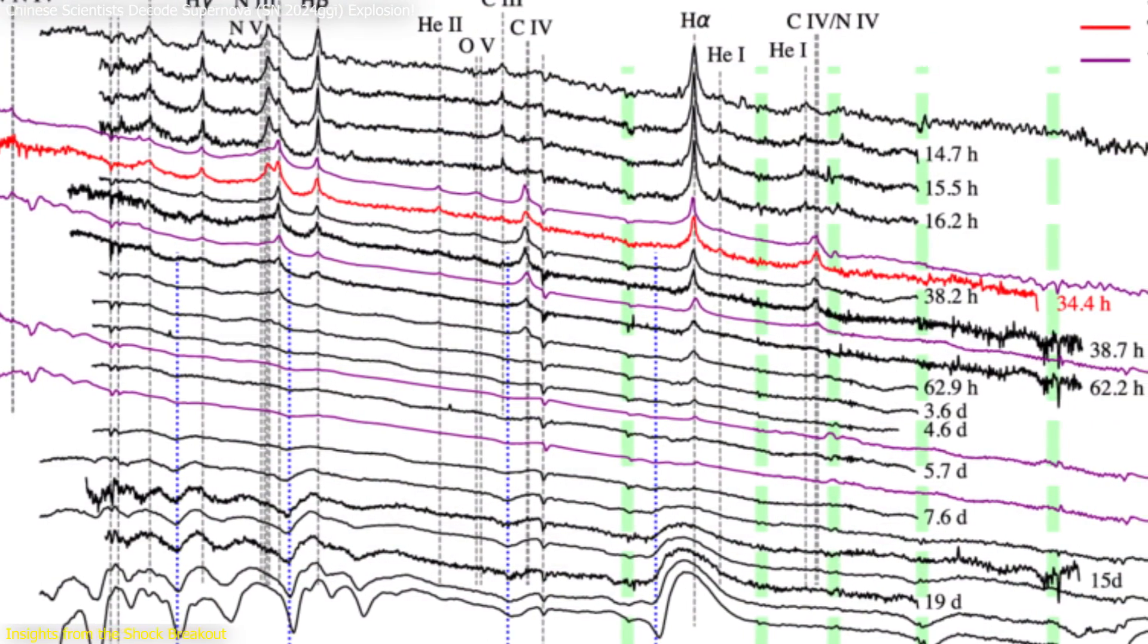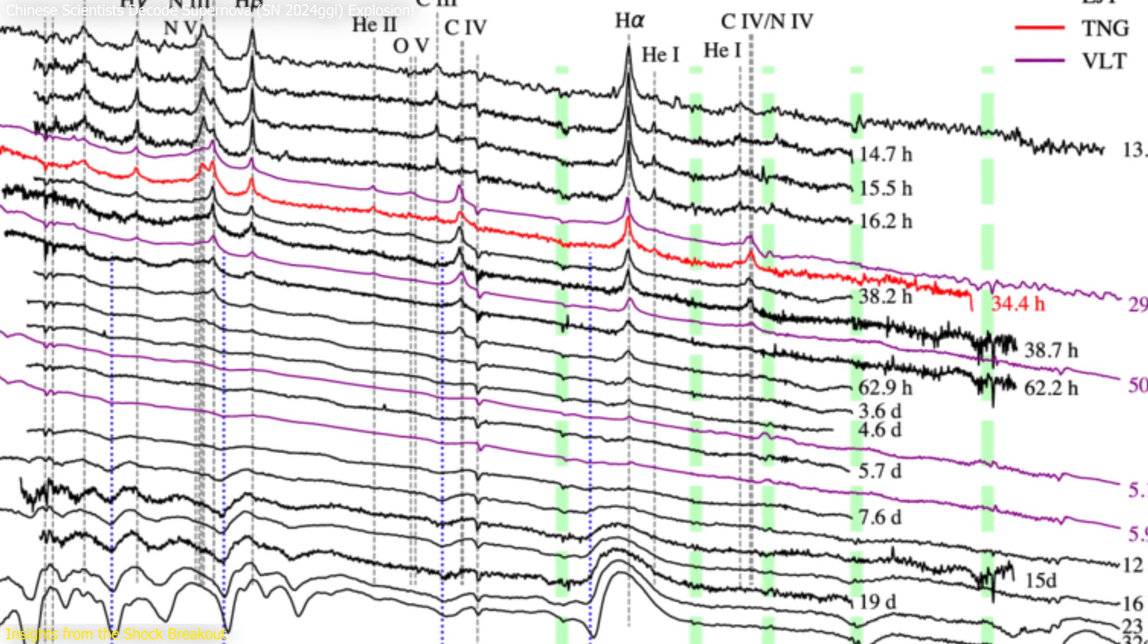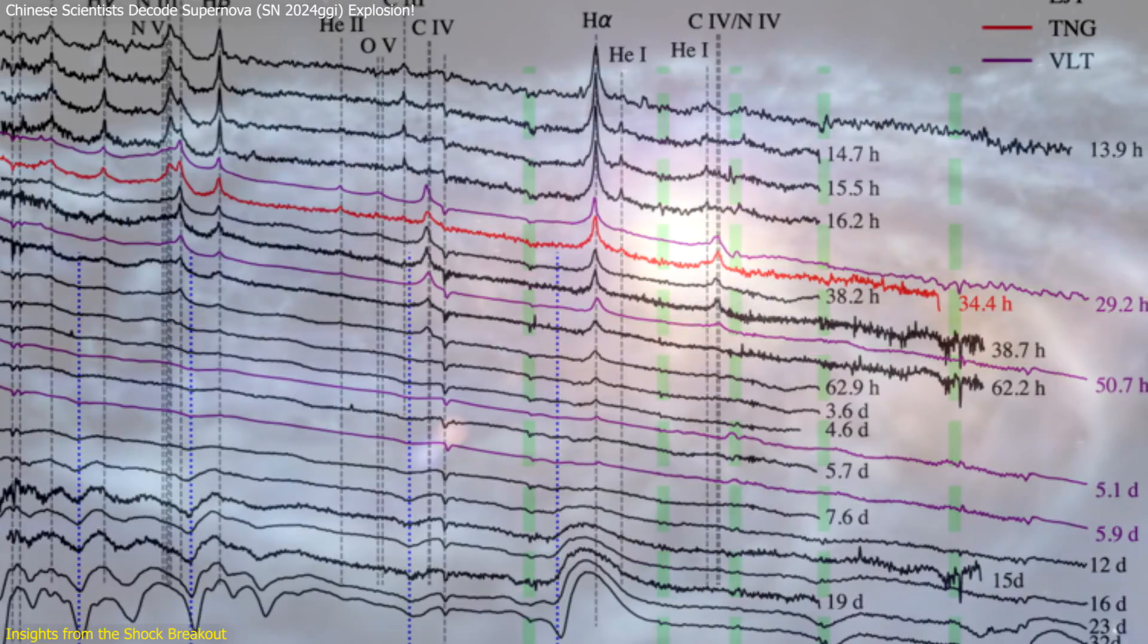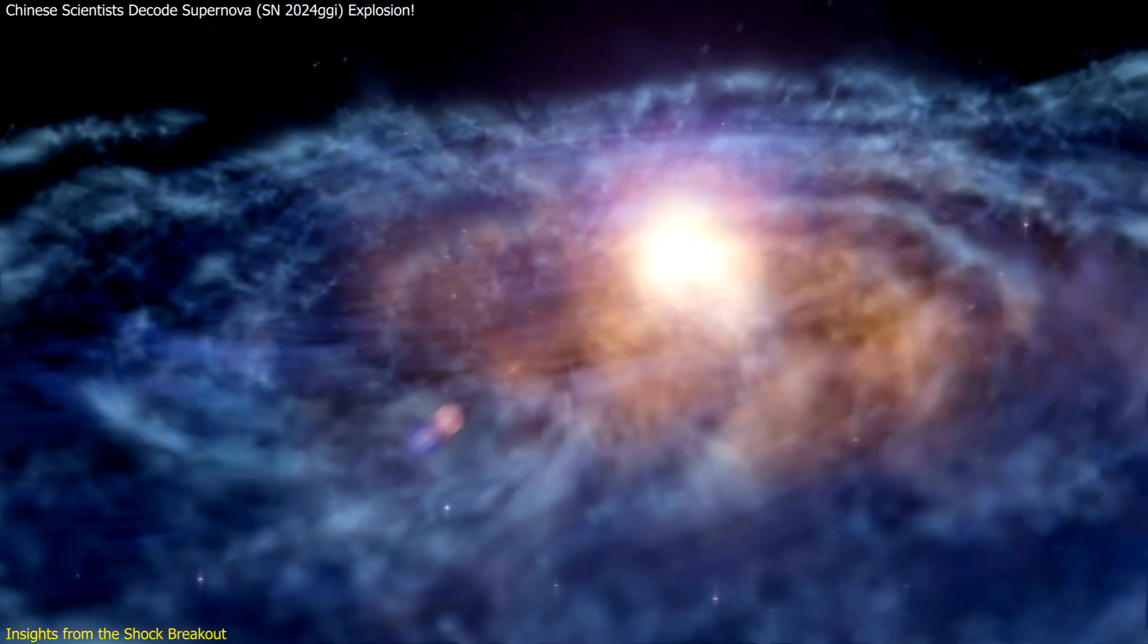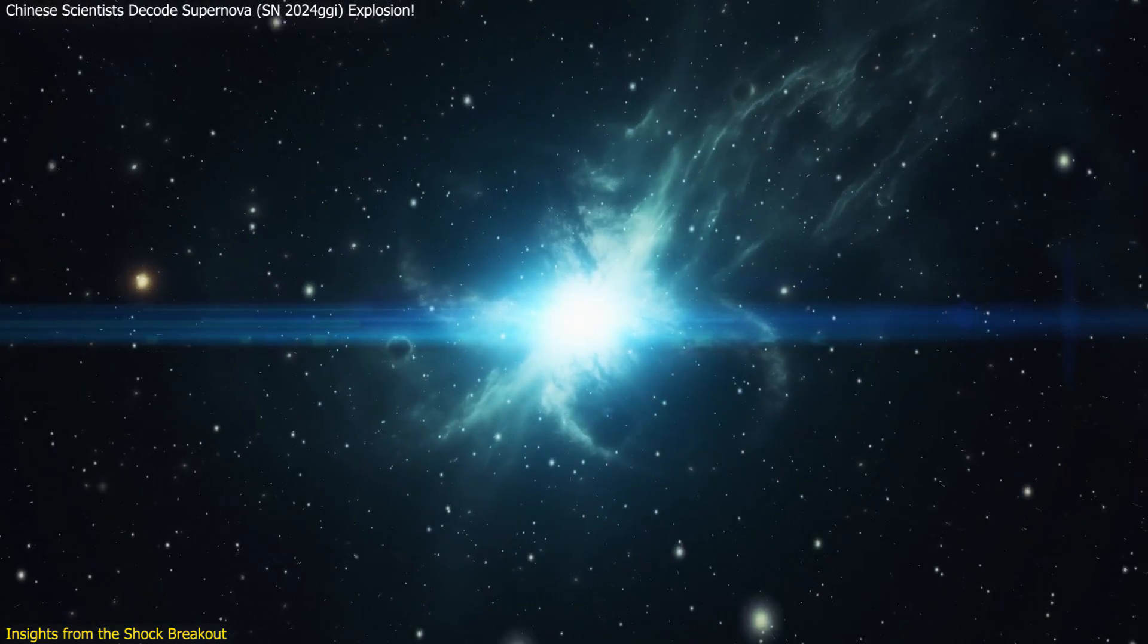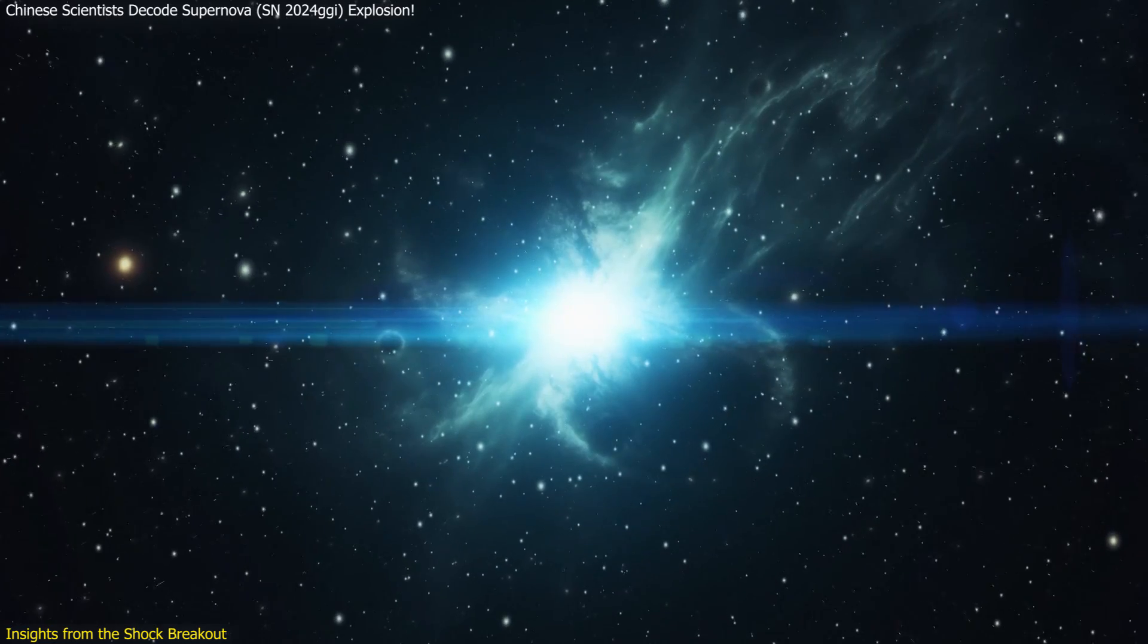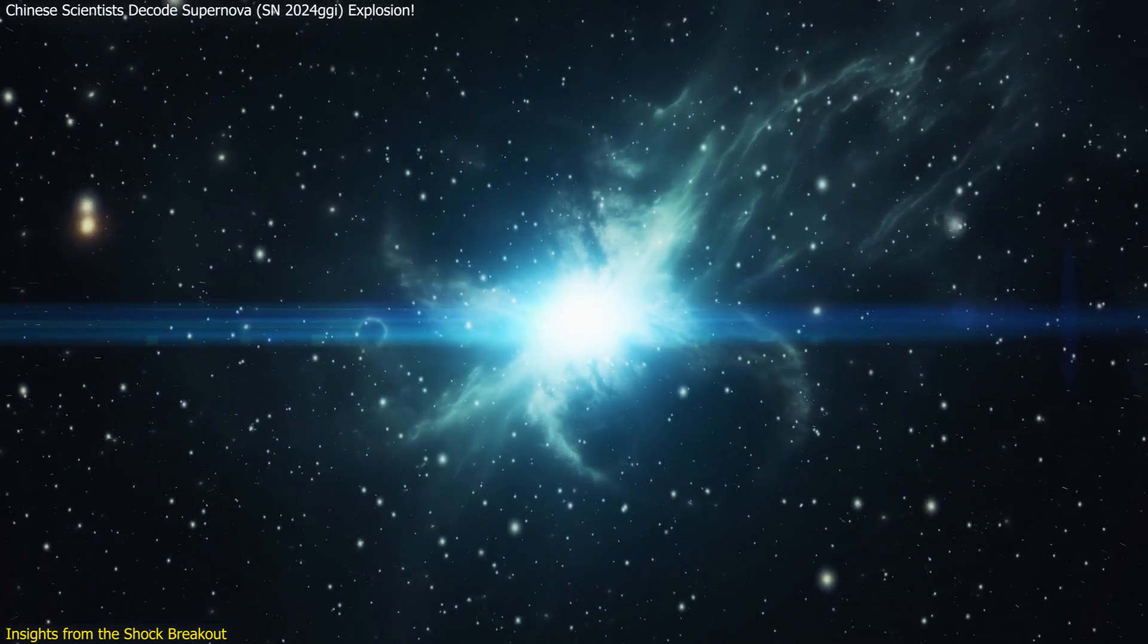The detailed spectra obtained from SN 2024 GGI reveal the distribution and composition of the circumstellar material. This information is vital for reconstructing the final evolutionary stages of the progenitor star. The shock wave's interaction with this material highlights the asymmetric nature of the explosion, challenging previous models that assumed a more uniform structure.